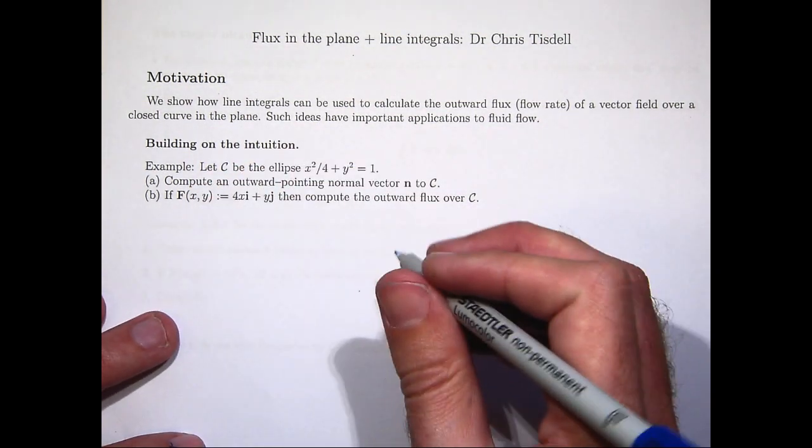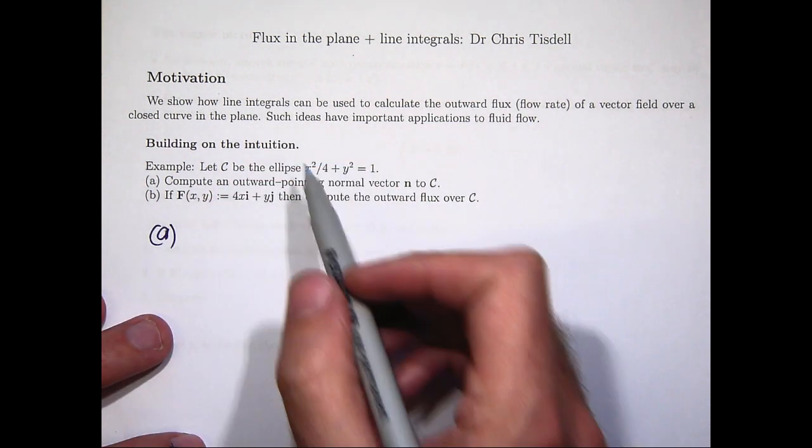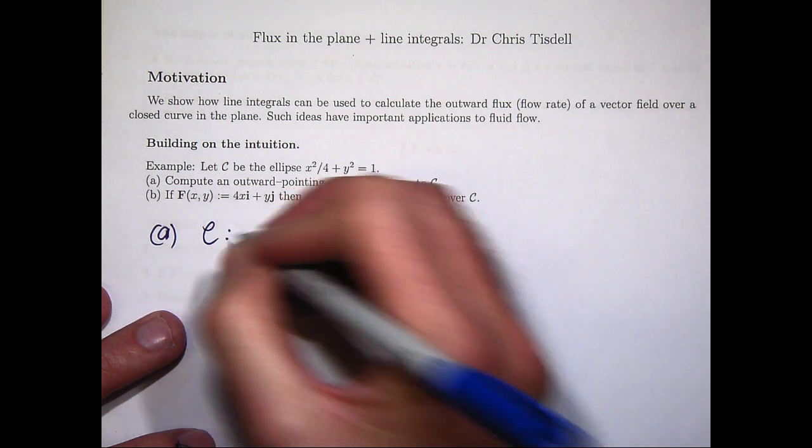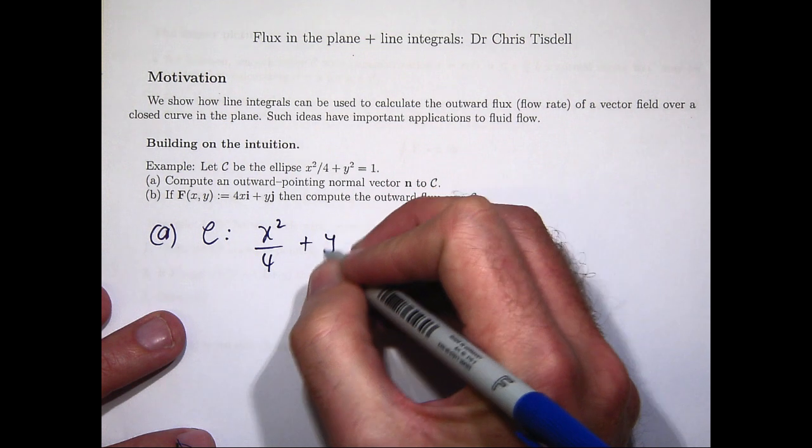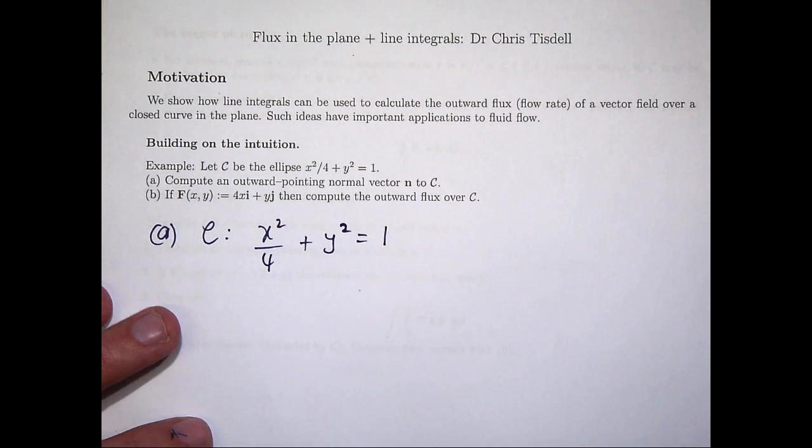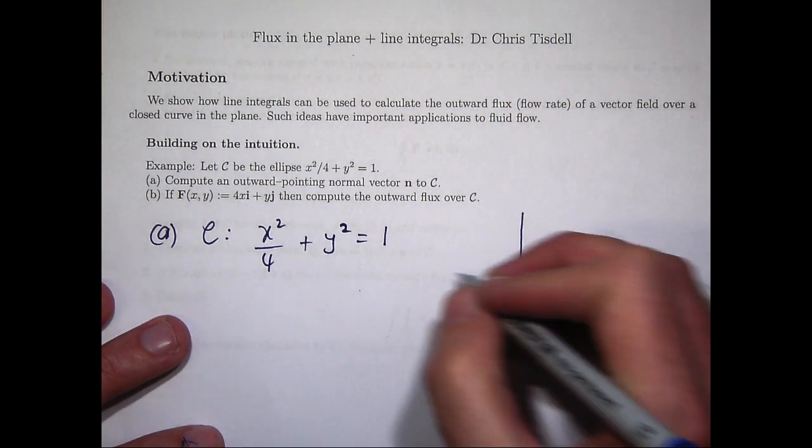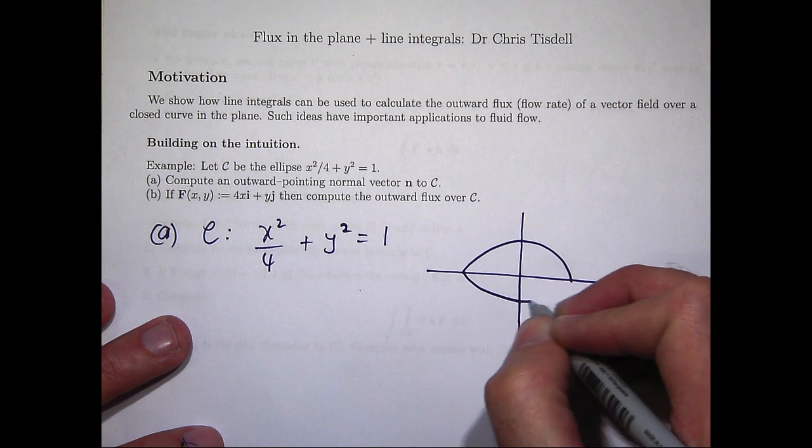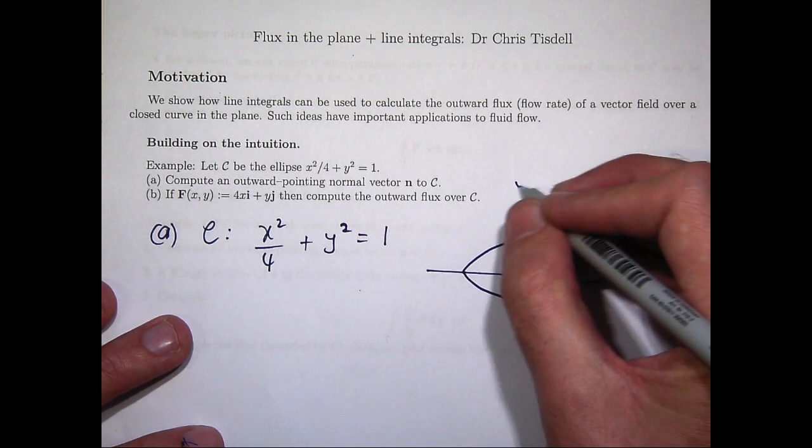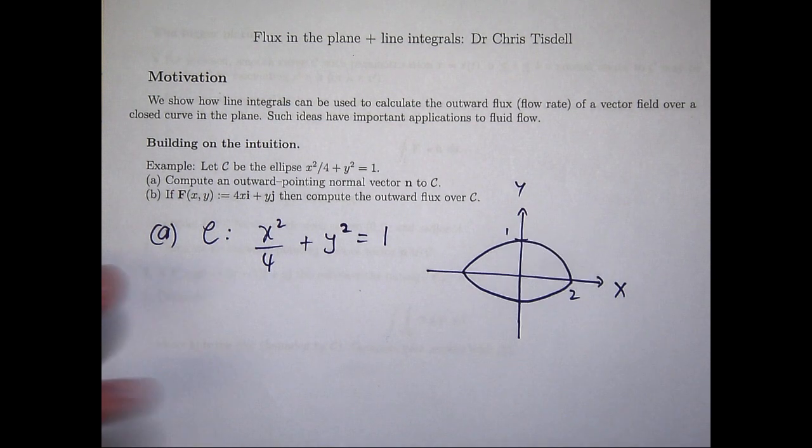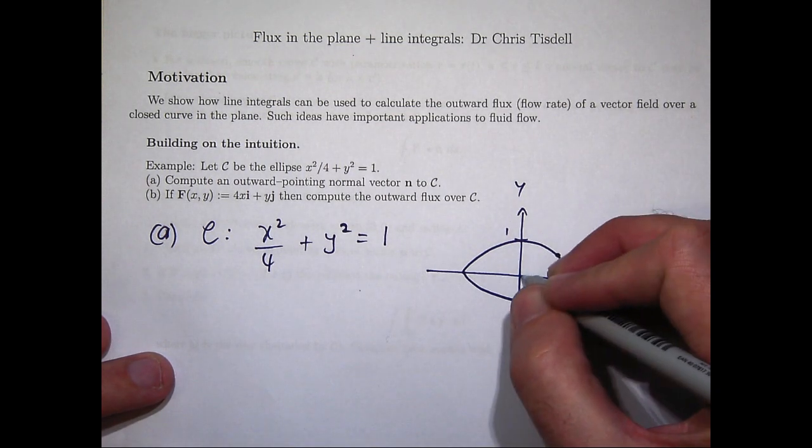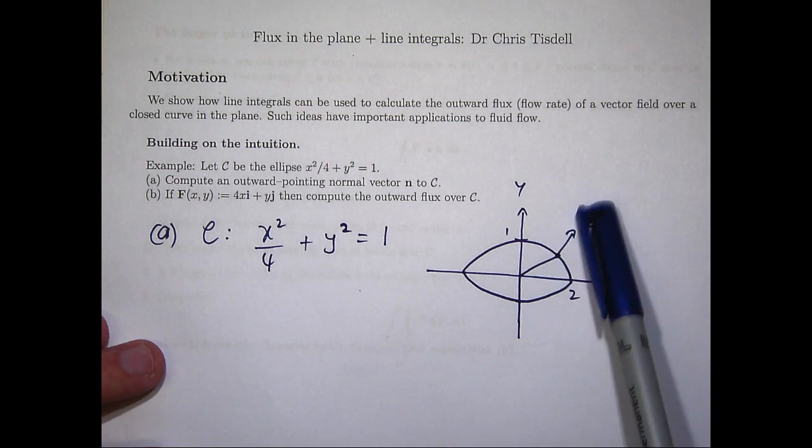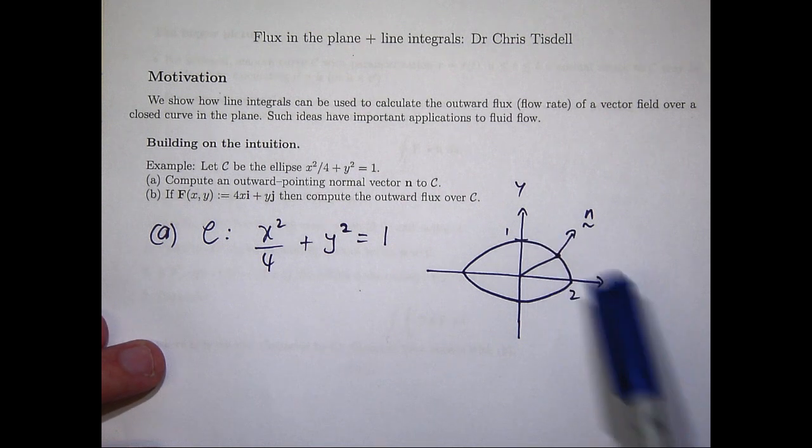So firstly let's first of all describe the ellipse using a vector function of one variable. Now there are various ways for computing a normal vector to a curve. I'm going to show you one way involving the cross product today. So you can think of my badly drawn ellipse here. This is the points that we are interested in. And what we are chasing is some vector n that is sort of normal to any tangent line or tangent vector to the curve.